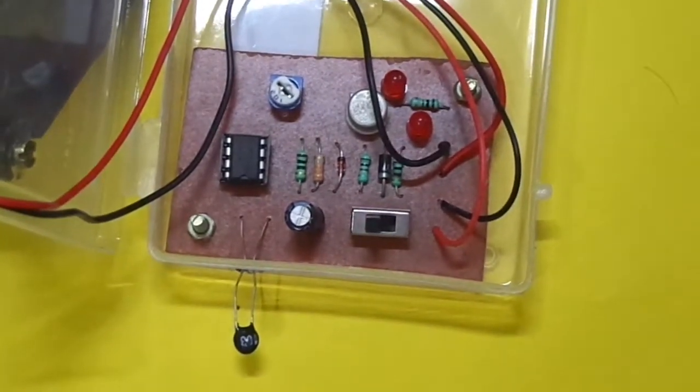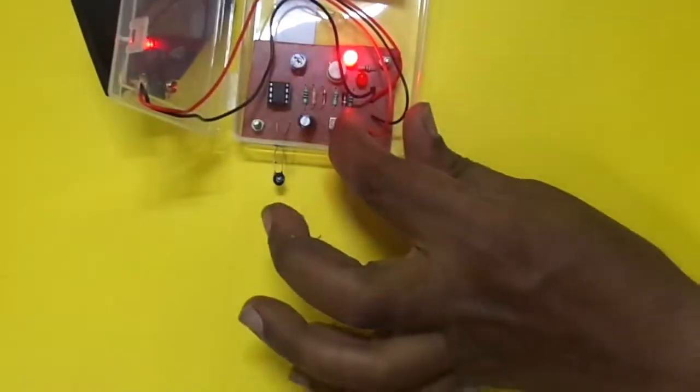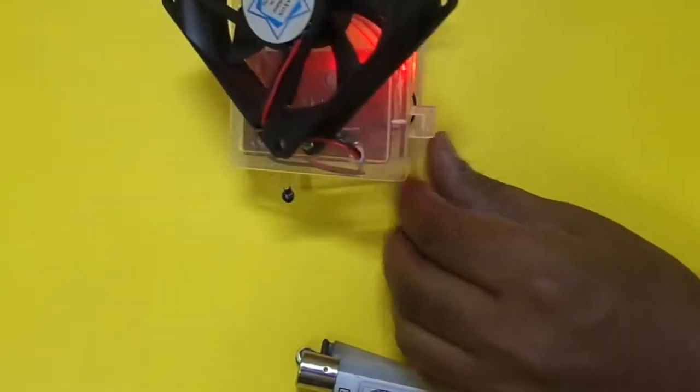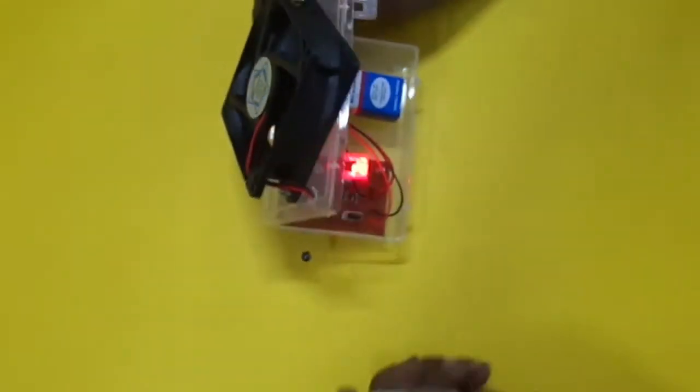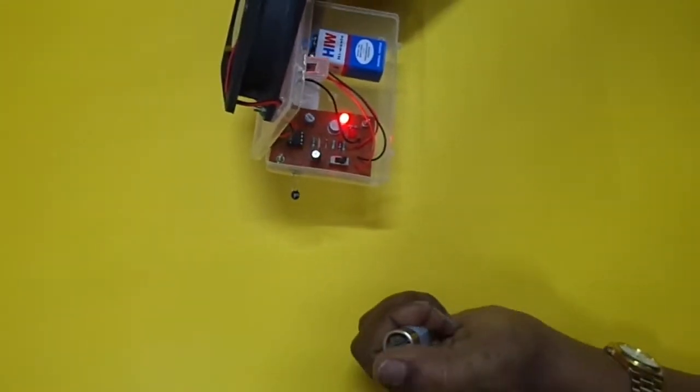Here is a lighter. You can switch on this lighter. Now you can observe that the fan is in off condition. Now we will heat the temperature with the help of the lighter.